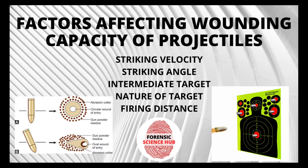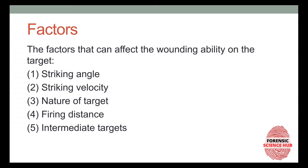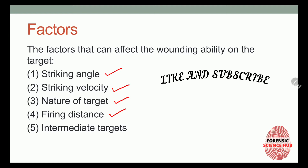Hello everyone, welcome back to my channel. In today's video I'm going to talk about the various factors that affect the wounding capacity of any projectile. There are five main factors that affect the wounding ability of any projectile over the target: striking angle, striking velocity, different types of targets, firing distance, and intermediate targets. All five factors are going to be discussed in this video.